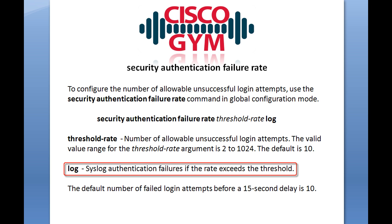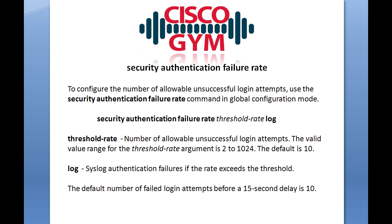Looking at the command, at the end it has 'log'. A lot of times with commands like this that's a parameter you can choose to implement or not, but in this case Threshold Rate is the only argument you specify, so in order for the command to be complete you need to have that 'log' at the end — you don't get a choice of whether you're going to log this or not. It's going to generate a syslog message if the rate exceeds the threshold, so assuming a threshold rate of 3, the fourth login attempt would be the one that generates the log.